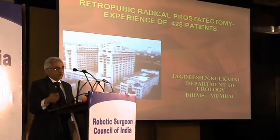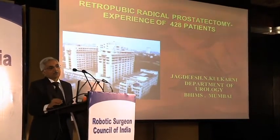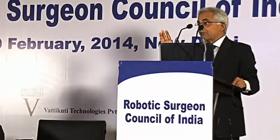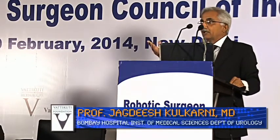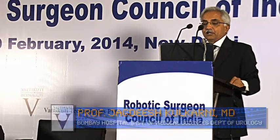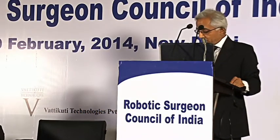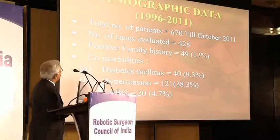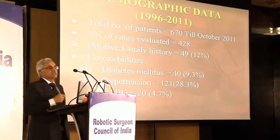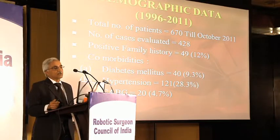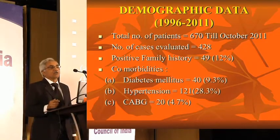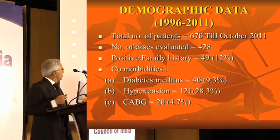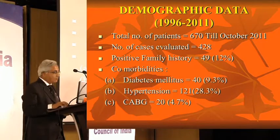I will spend the first 10 minutes on open data which we published in 2011 with a 7-year follow-up. The program of open radical prostatectomy started back in 1996. From 1996 to 2011, we have done about 670 open radical prostatectomies, of which 428 were evaluable, with a minimum follow-up of at least 3 months and a maximum of about 15 years.